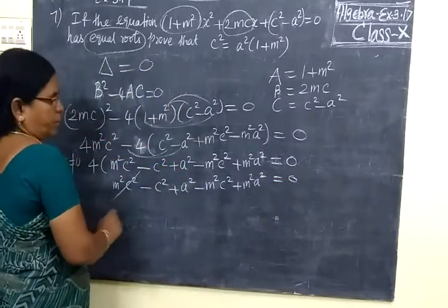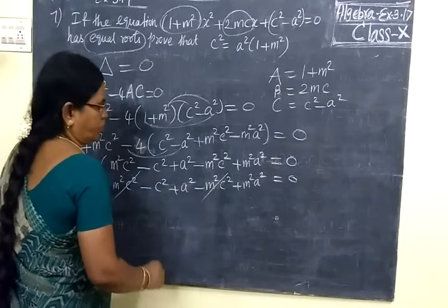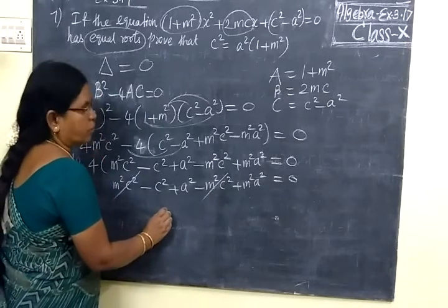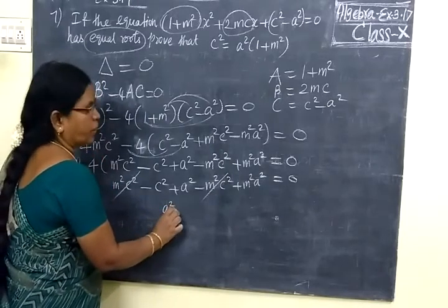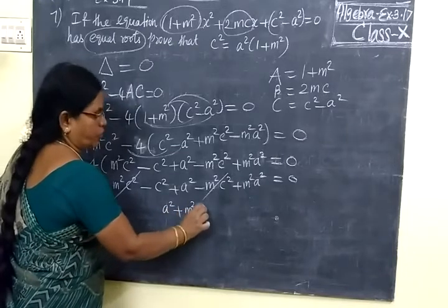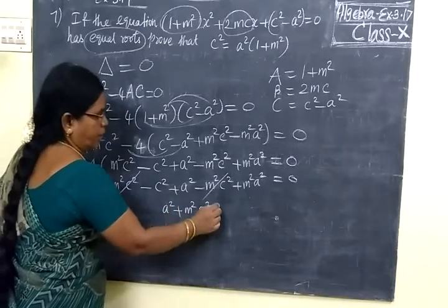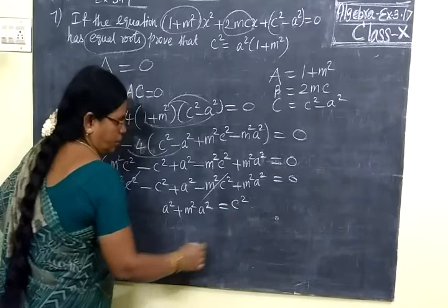So plus M²C² minus M²C² cancelled. So we are writing A² plus M²A².